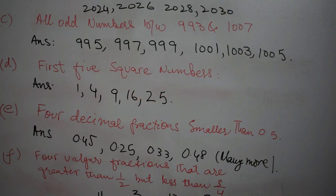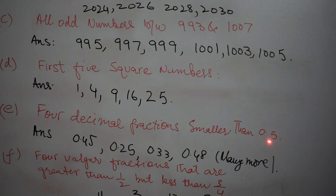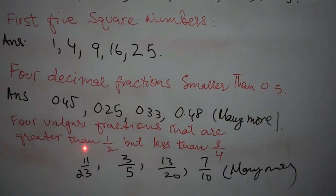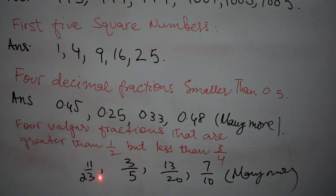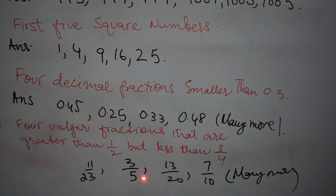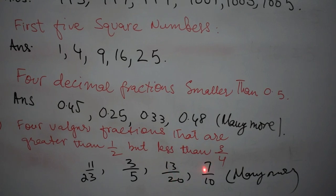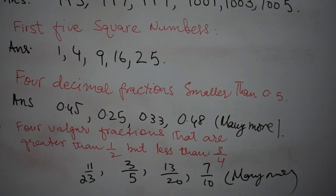The next part is four decimal fractions smaller than 0.5. There are again many answers for this question. I have only written few of them: 0.45, 0.25, 0.33, 0.48. We have to write fractions smaller than 0.5. So there are hundreds of answers for this question. Four vulgar fractions that are smaller than half but less than 3 by 4. The answer is 11 upon 23, 3 upon 5, 13 upon 20, 7 upon 10. And there are again many more answers to this question.